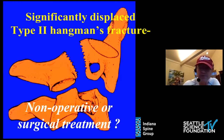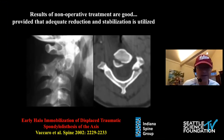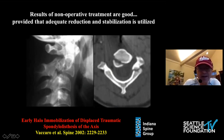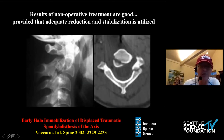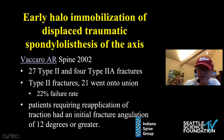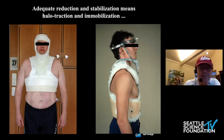It is these type 2 fractures that are very controversial regarding operative versus non-operative treatment. Alex Vaccaro's paper almost 20 years ago showed that the results of non-operative treatment of these type 2 fractures were good, with the caveat that adequate reduction and stabilization were utilized — meaning a period of Gardner-Wells or halo traction followed by halo immobilization. Even with halo immobilization, he had a 22% failure rate with these type 2 Hangman's fractures.